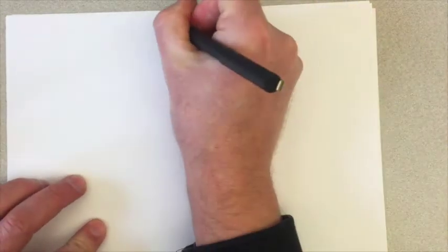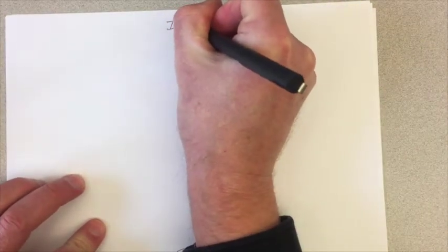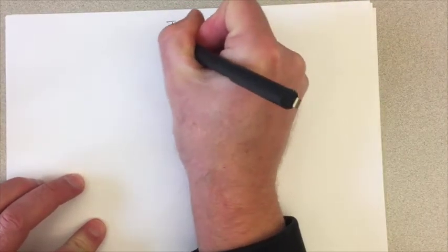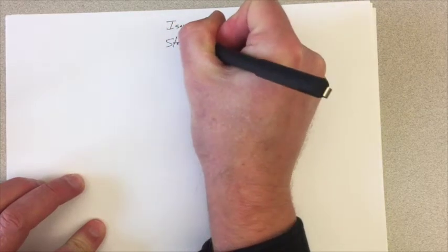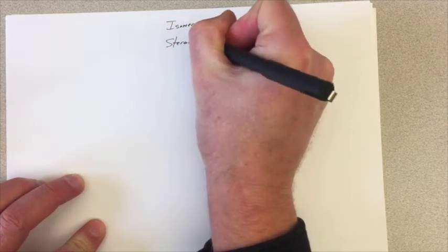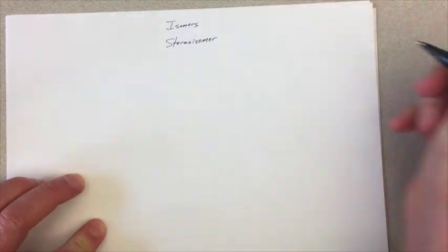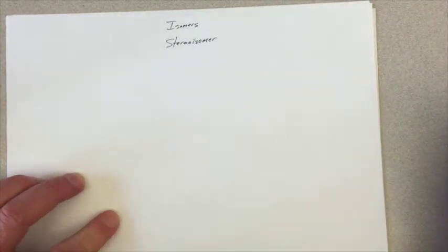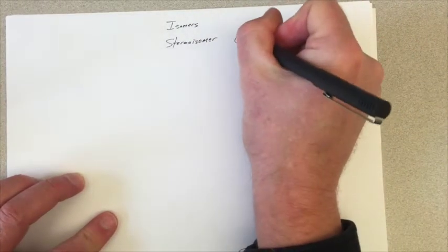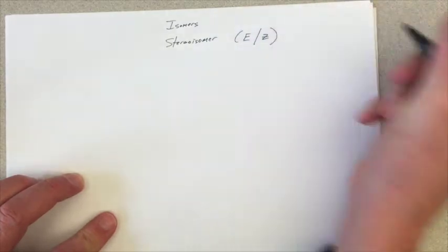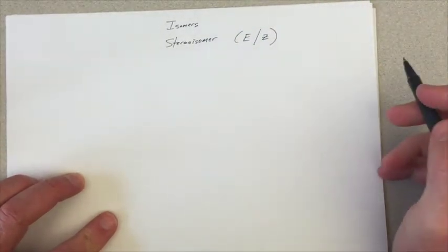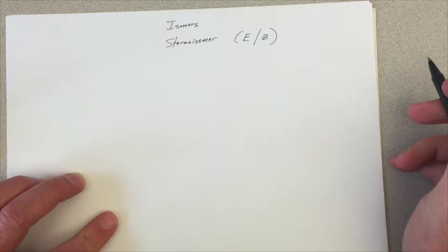Okay, let's continue our discussion about isomers and stereoisomers. We talked about cis and trans as a type of stereoisomer, but there's a different type of nomenclature called an E or Z nomenclature, which is related to the cis-trans concept that we talked about earlier.